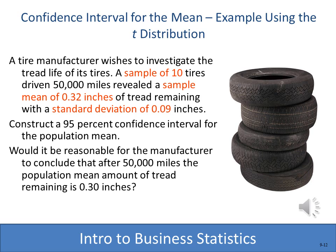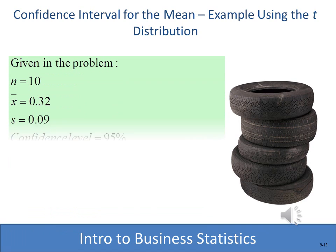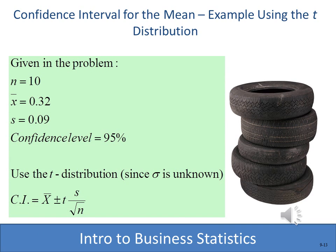Here's an example computing a confidence interval using t instead of z. A tire manufacturer took a sample of 10 tires driven 50,000 miles, finding a mean of 0.32 inches of tread remaining. The sample standard deviation was 0.09. We want a 95% confidence interval for the population mean. The margin of error formula with t uses the sample standard deviation divided by the square root of n, and we need to look up the t-value.